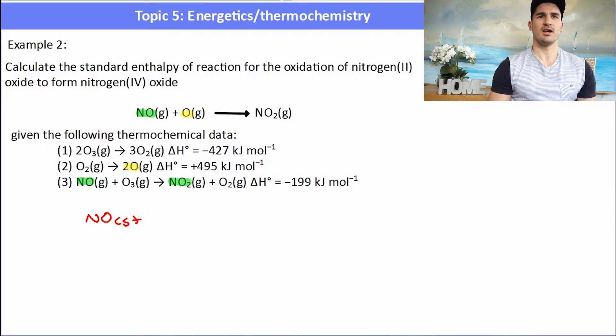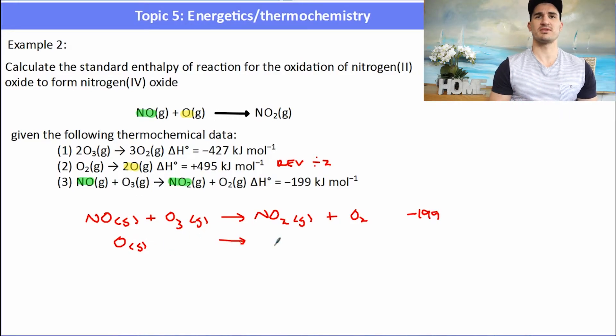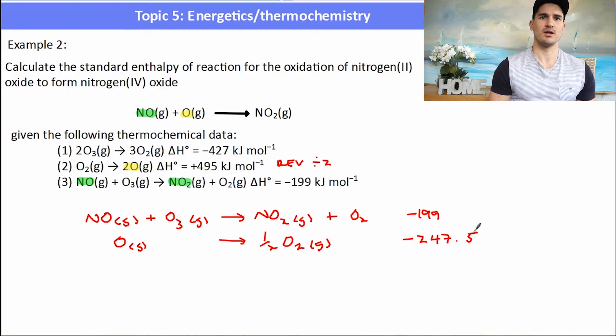So for equation 3, I can simply just write that one out in the forward direction. The NO is on the correct side and the NO2 is on the correct side. So I just need one of that reaction. So that's minus 199. The second one, well what I have to do is actually I have to flip reaction 2 around, so I have to reverse it and I have to divide it by 2 because I only need one of the oxygen radicals. So I'm going to rewrite the equation, dividing it by 2, but then I need to remember to divide the delta H by 2 as well. So the delta H was 495, but I've got to flip it so it would be negative 495 and then I'm going to divide it by 2 which is negative 247.